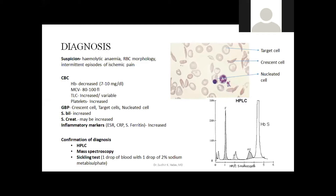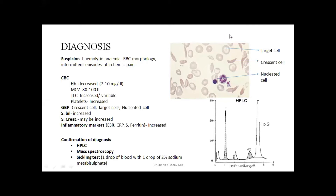In the GBP, three things we can see. First is nucleated cells. Why are there nucleated cells? These nucleated cells are supposed to be destroyed in the spleen. If there is no functional spleen, these cells are going to be released into the circulation. If small polymerization occurs, the hemoglobin clumps at the center, giving an appearance of a target — so these cells are known as target cells.